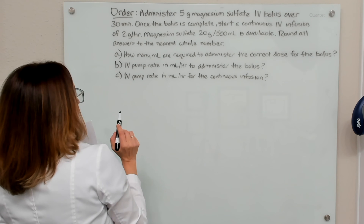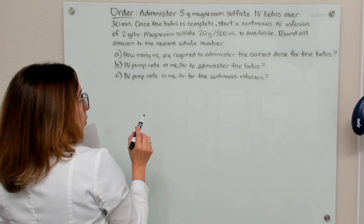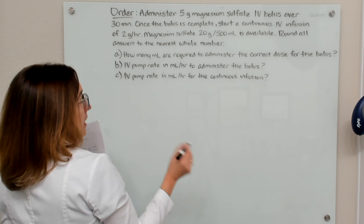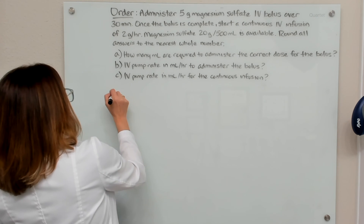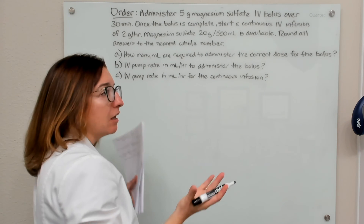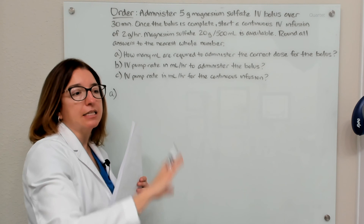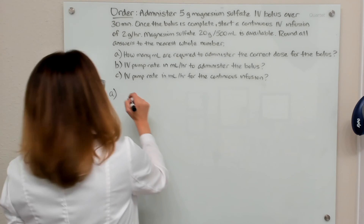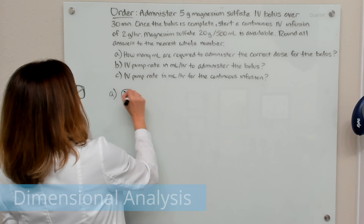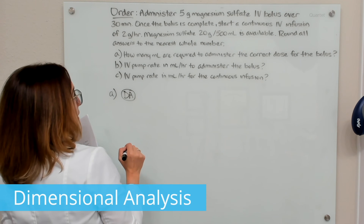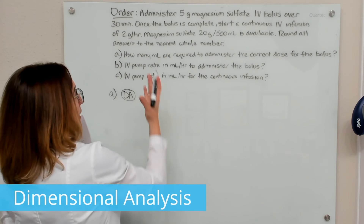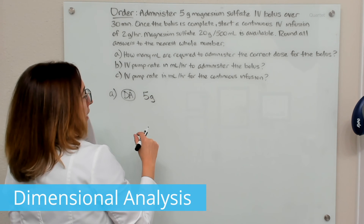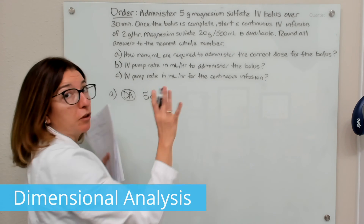Part A is asking us how many milliliters are required to administer the correct dose for the bolus. We can solve this with dimensional analysis, ratio and proportion, or the formula method. Let's first use dimensional analysis. With this method, I'm going to start with what is ordered, which is five grams — what is ordered for the bolus.